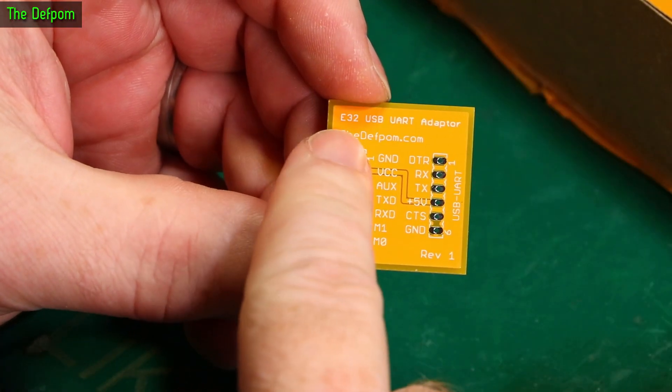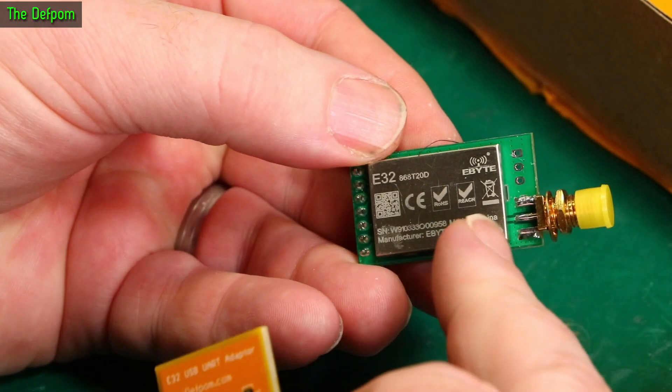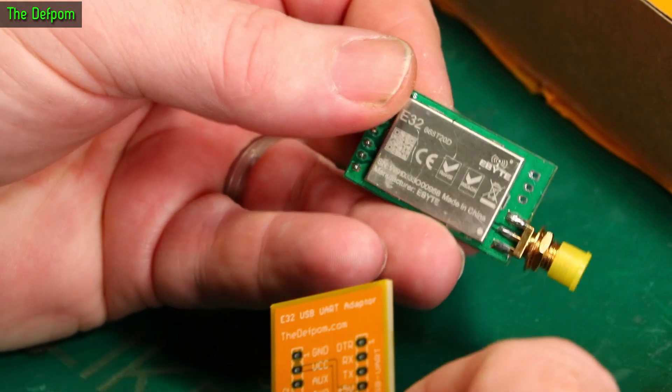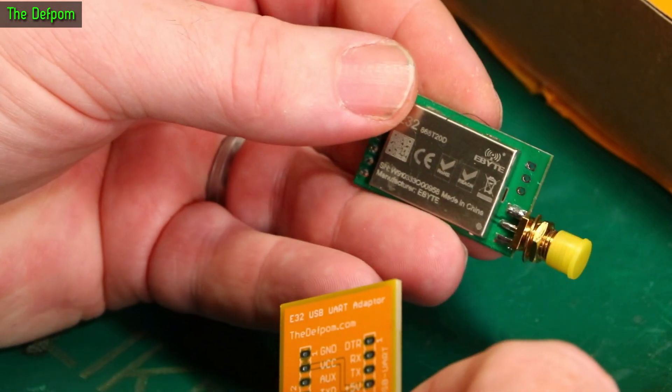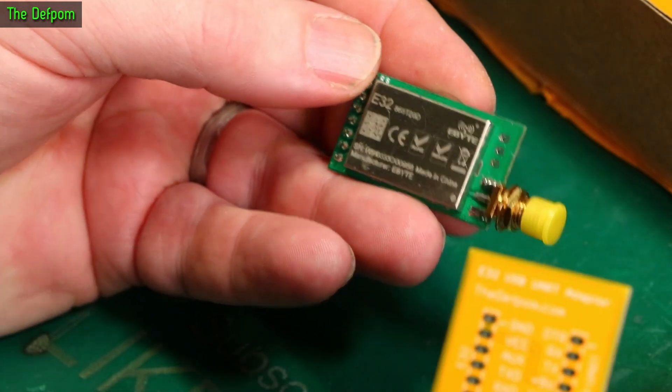So you've got the E32 LoRa modules which is one of these. You can get different frequencies and they've got a standard pinout. All got the same pinouts on them. Programming, there's different ways you can do it. In your firmware, in your app, if you're actually going to use these things, which is one of the ways I do them.